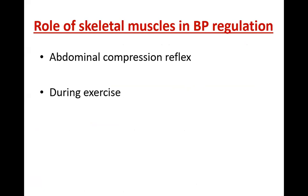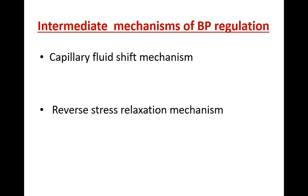The role of skeletal muscles in blood pressure regulation: whenever there is abdominal compression reflex during hypotension, abdominal muscles are contracted, producing a pushing effect on venous flow. Venous return will increase, helping to increase cardiac output and thereby blood pressure. During exercise, the calf muscles contract, giving a pushing effect to the venous blood flow, increasing venous return, increasing cardiac output, and increasing blood pressure.